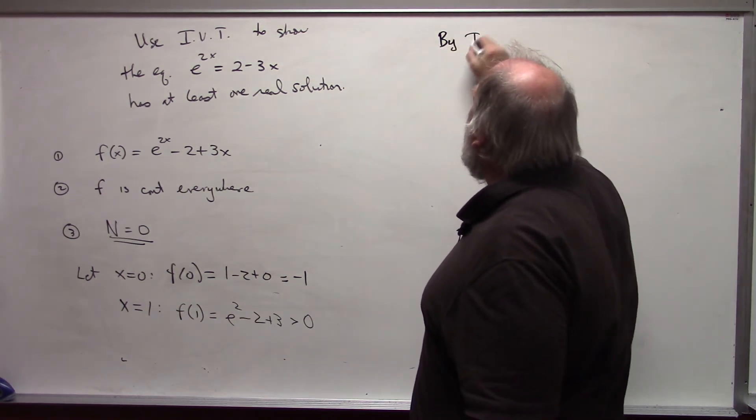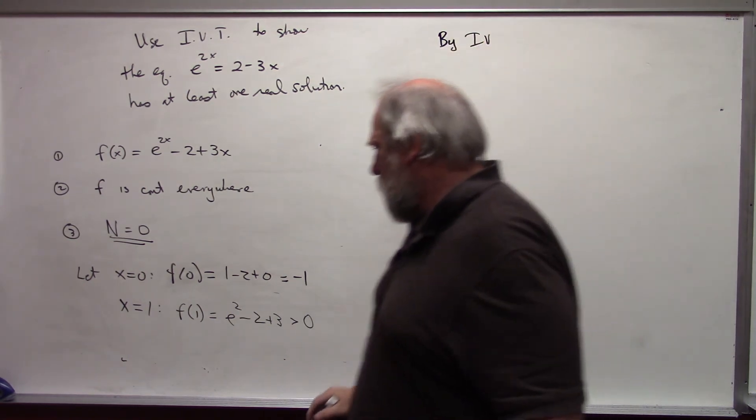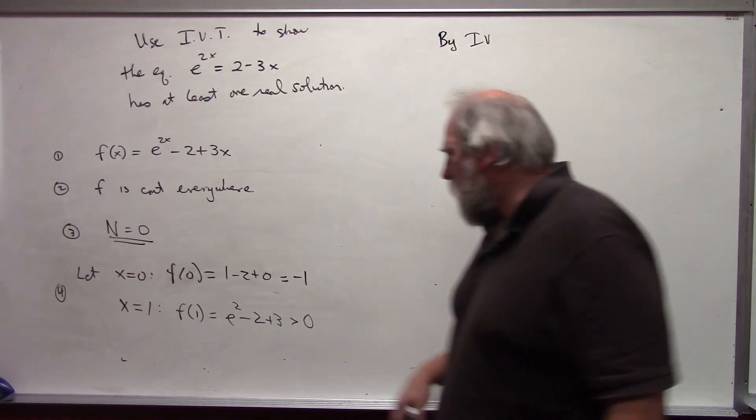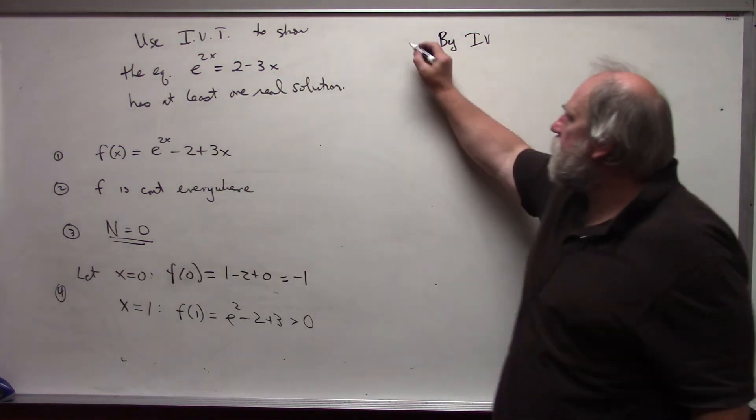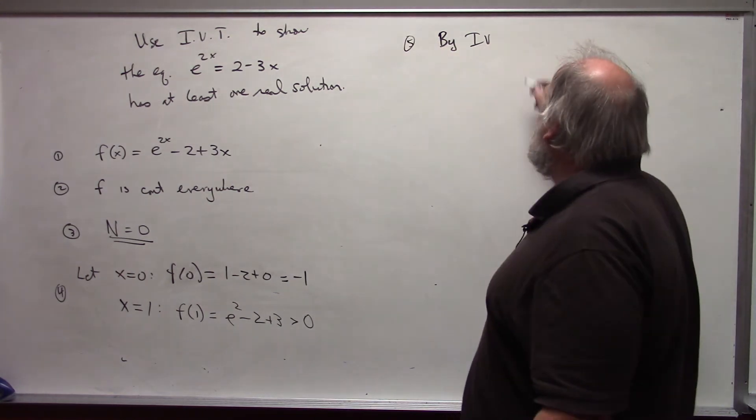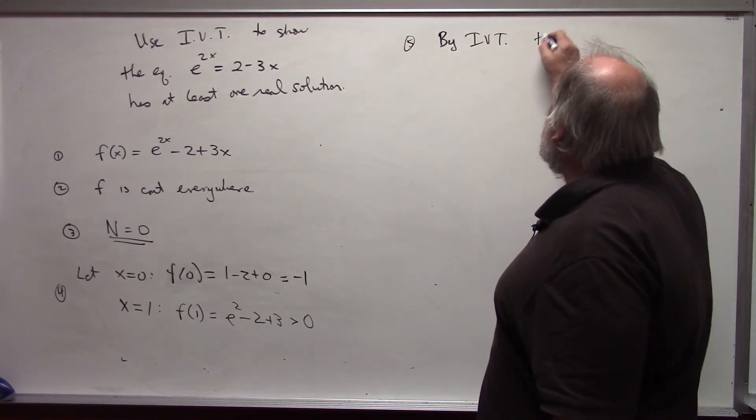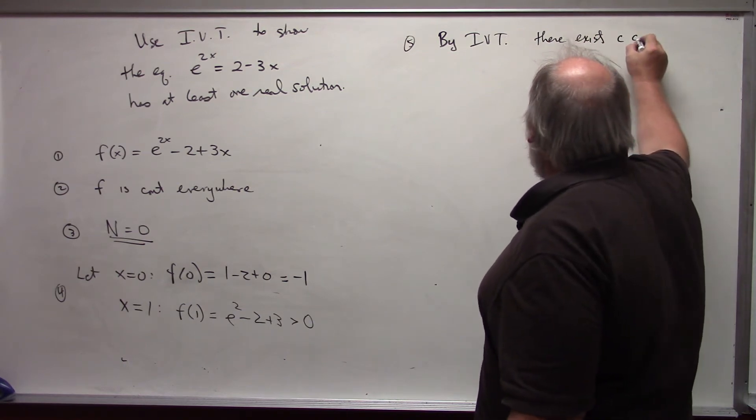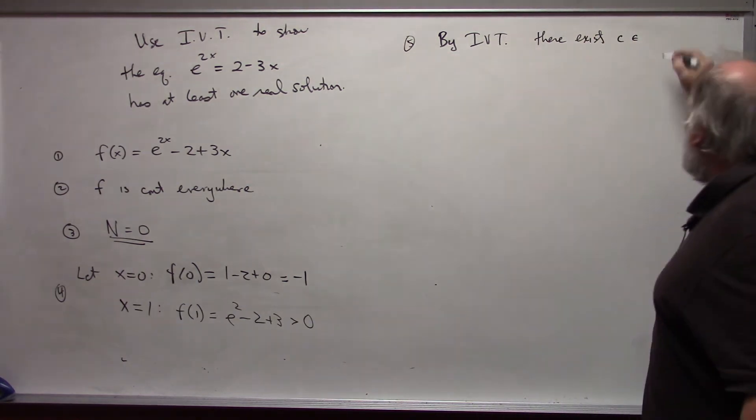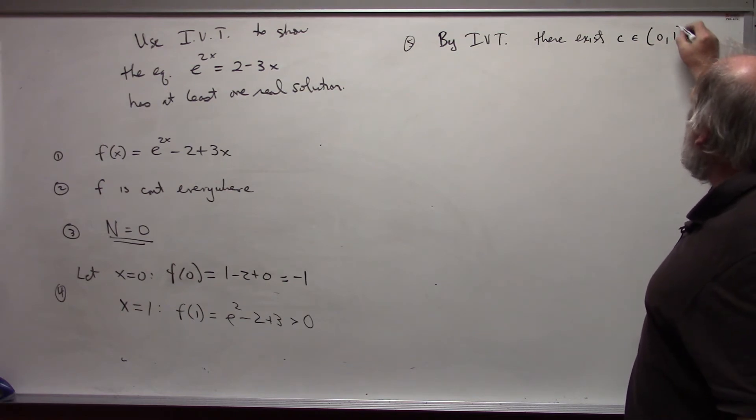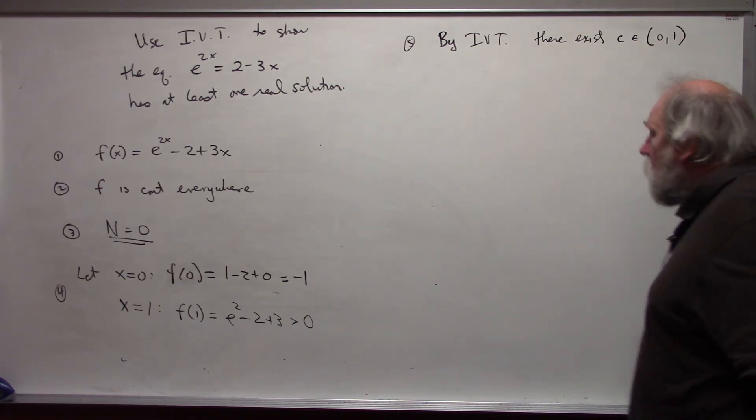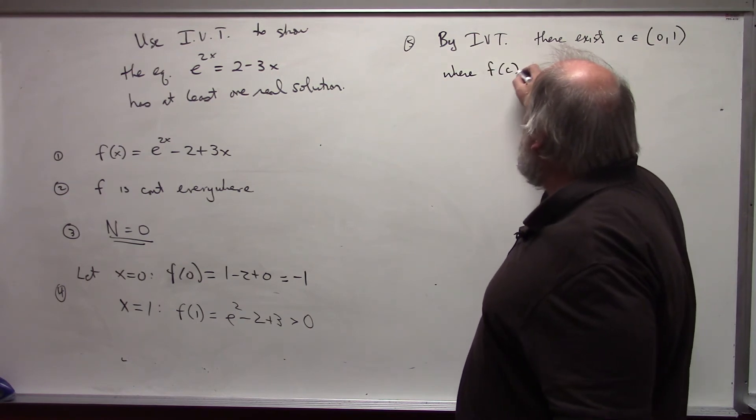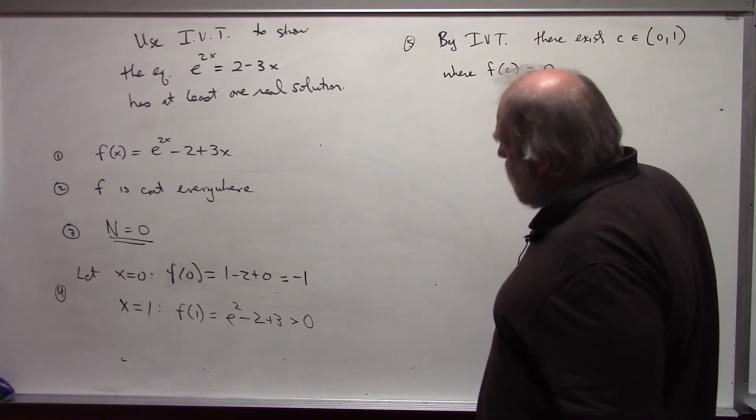So, by IVT, this is my fourth step, by IVT, there exists some c in the open interval from zero to one, that's my a and b, where f(c) is equal to zero. This is my value for n.